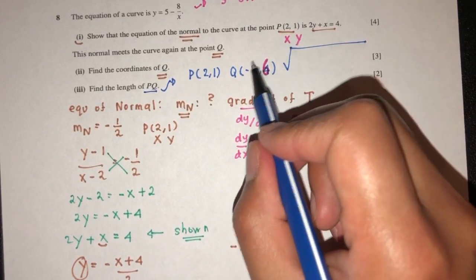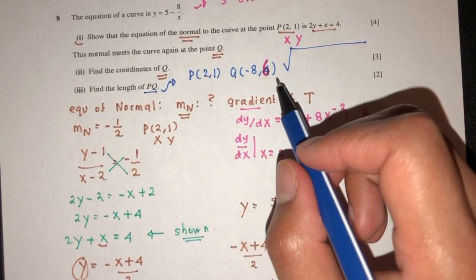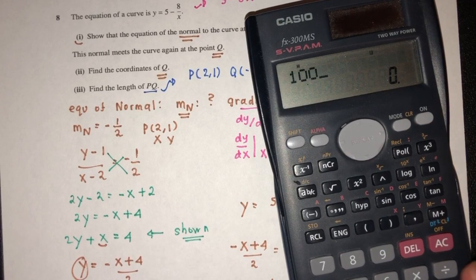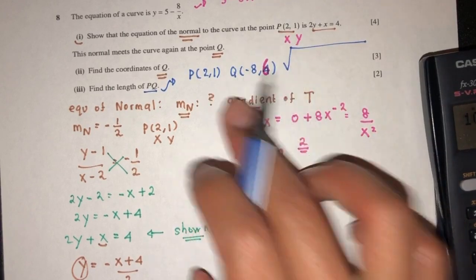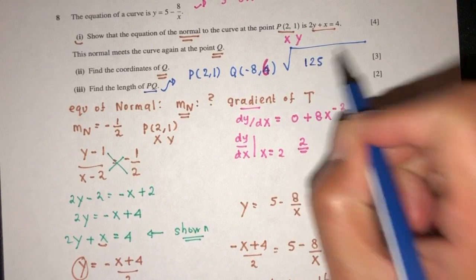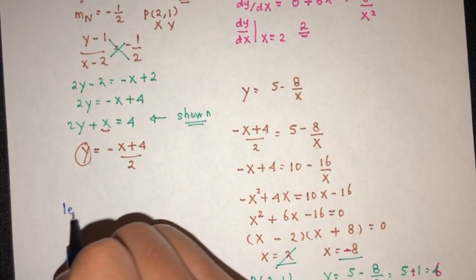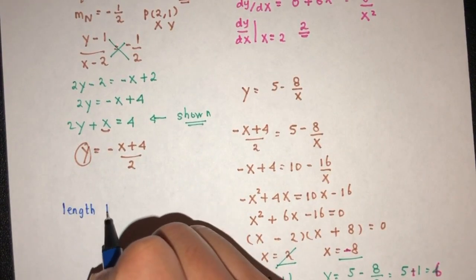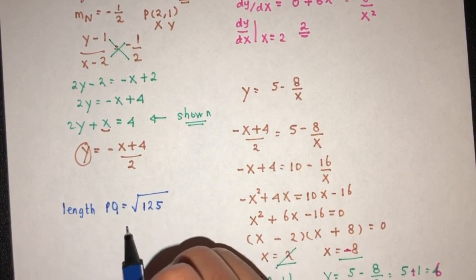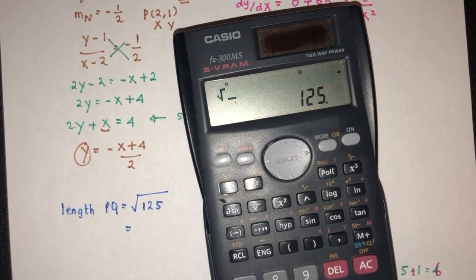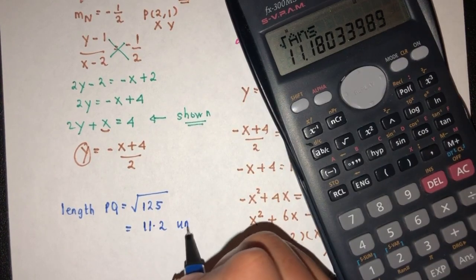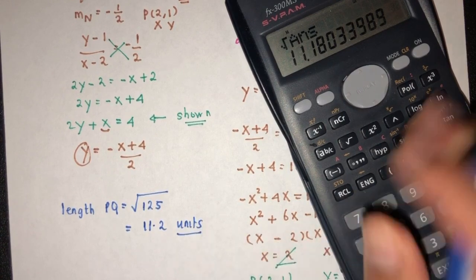The length will be the square root of: (minus 8 minus 2) squared plus (6 minus 1) squared. That gives minus 10 squared, which is 100, plus 5 squared, which is 25 — totaling 125. So the length of PQ will be the square root of 125, which simplifies to 11.2 units to 3 significant figures.